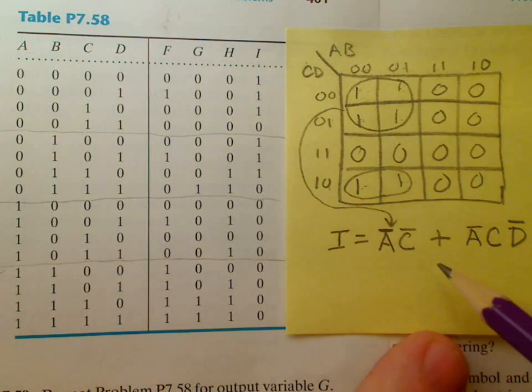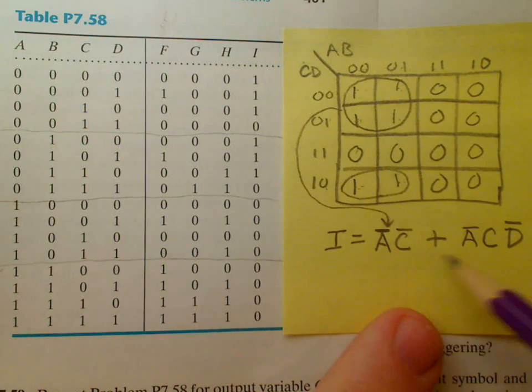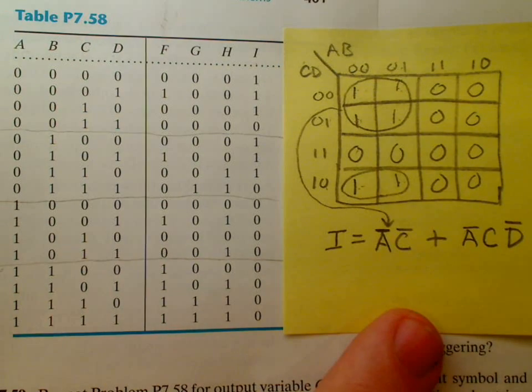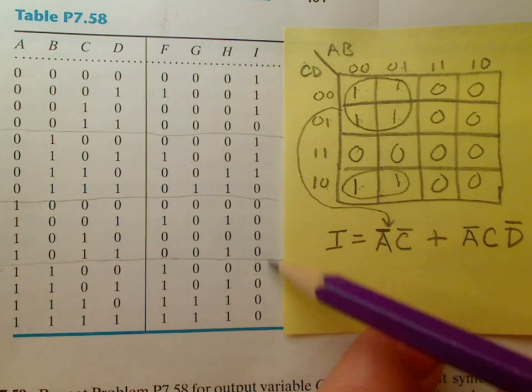Now if I were to build a circuit that matched this Boolean expression, that represented this Boolean expression, it would result in this particular truth table.